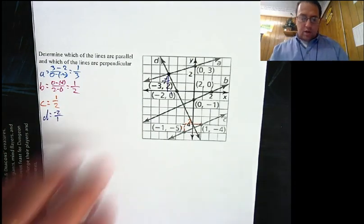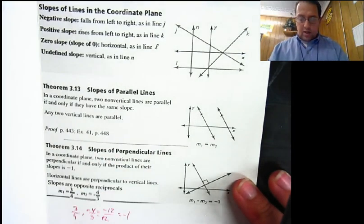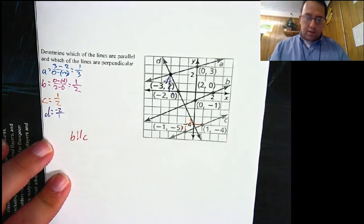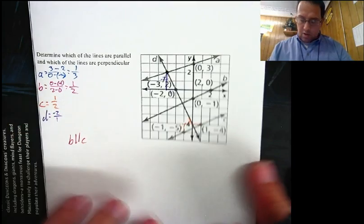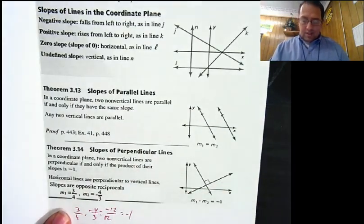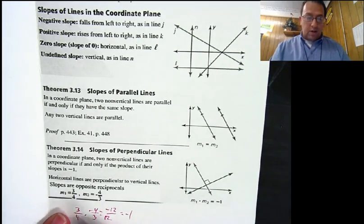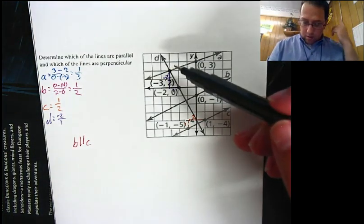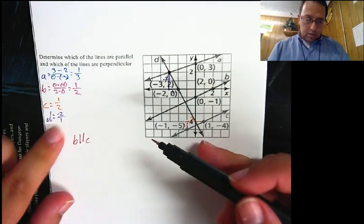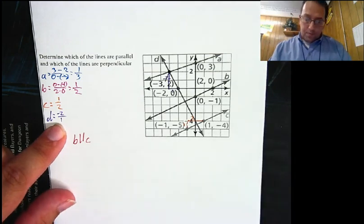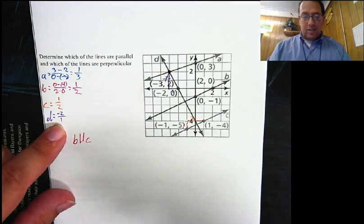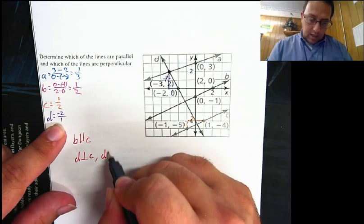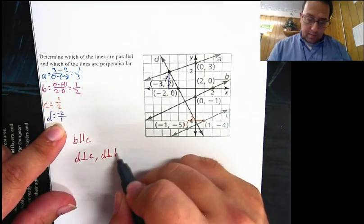Which ones are parallel? Parallel lines will have the same slope. Looking at our slopes, B and C both have slope 1/2, so B is parallel to line C. Now, which ones are perpendicular? Perpendicular slopes multiply to equal negative one, or we look for opposite reciprocals. The slope of A is 1/3, and its opposite reciprocal would be negative 3. But the only candidate is D, with slope negative 2 over 1. The opposite reciprocal of negative 2 over 1 is positive 1 over 2 — so D is perpendicular to both B and C. And there are our answers.